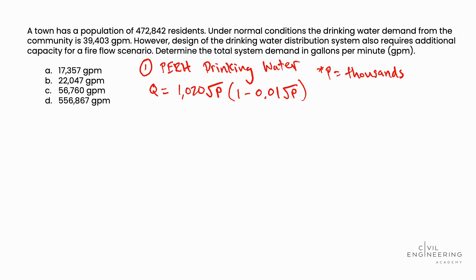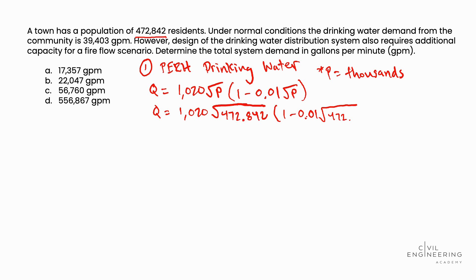We're going to look back at the problem statement to solve this. Q, the fire flow rate, is equal to 1,020 × √P, where P is the population in thousands. In the problem statement, we're told 472,842 residents, so we divide that by 1,000 to get P = 472.842. Performing this calculation, we determine that the fire flow rate is equal to 17,356.841 gallons per minute.